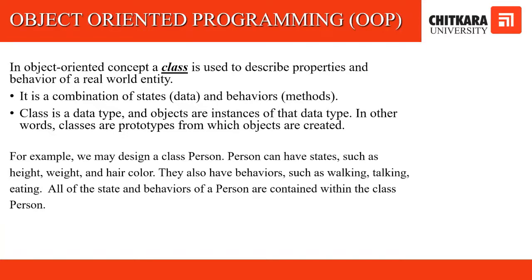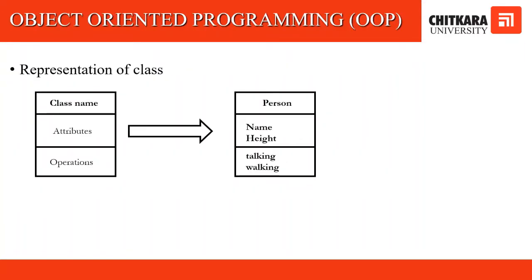This is the relationship between a class and an object. For example, we may design a class called Person. A person can have states such as height, weight, and hair color. A person also has behaviors such as walking, talking, and eating. All of the states and behaviors of a person are contained within the class Person. A class can be represented with a class name, attributes like name and height, and operations like walking and talking.